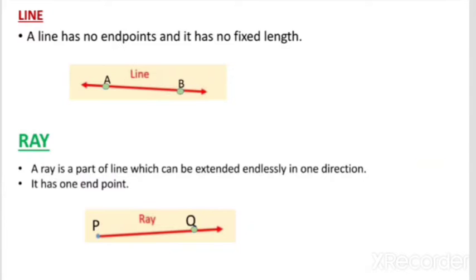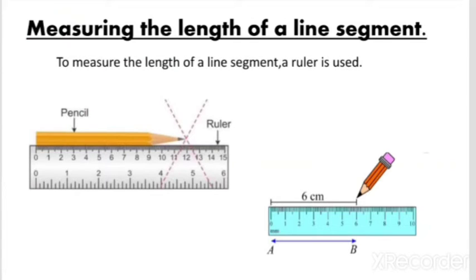How do we measure the length of a line segment? To measure a line segment we need a ruler. In the given figure, to measure line segment AB, place the tip of the ruler at the starting point A, then read the number on the scale where the line segment ends — that is point B. In this case it comes out to 6, meaning the given line segment is 6 centimeters.